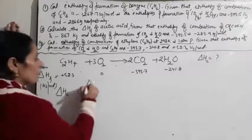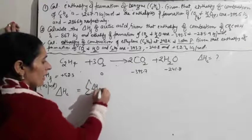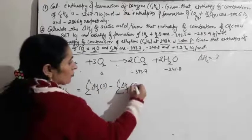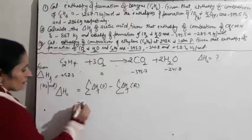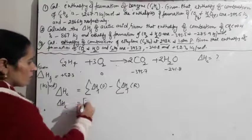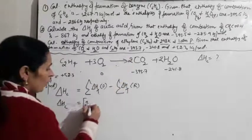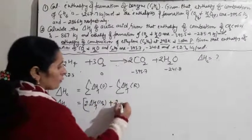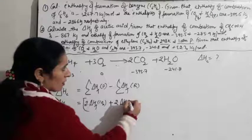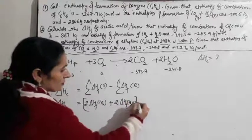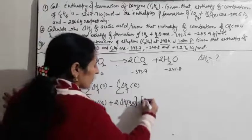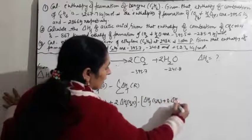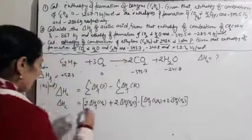Delta Hc = summation of delta H formation of products minus summation of delta H formation of reactants. Products: 2×(delta Hf CO2) + 2×(delta Hf H2O). Reactants: delta Hf C2H4 + 3×(delta Hf O2).